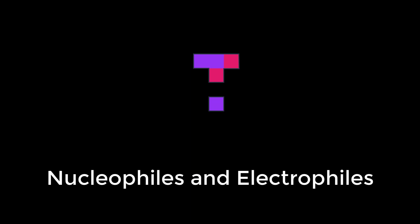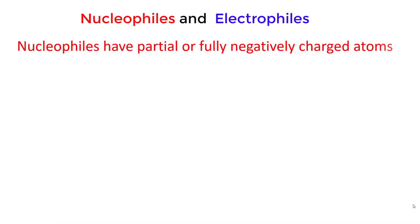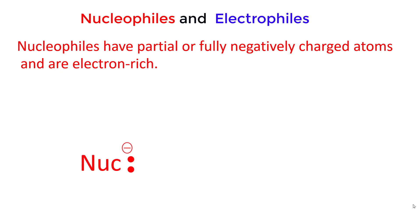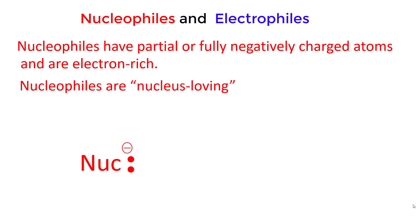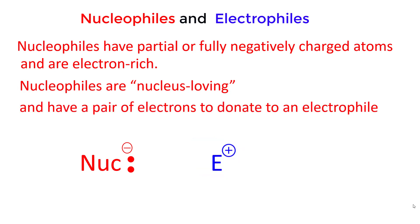Nucleophiles and Electrophiles. Nucleophiles are partial or fully negatively charged atoms and are electron rich. Nucleophiles are nucleus loving and have a pair of electrons to donate to an electrophile.